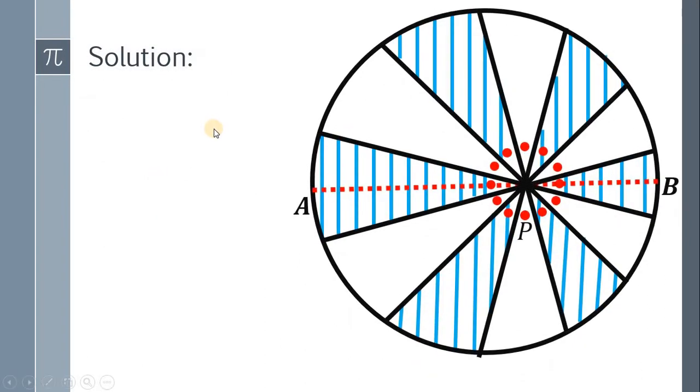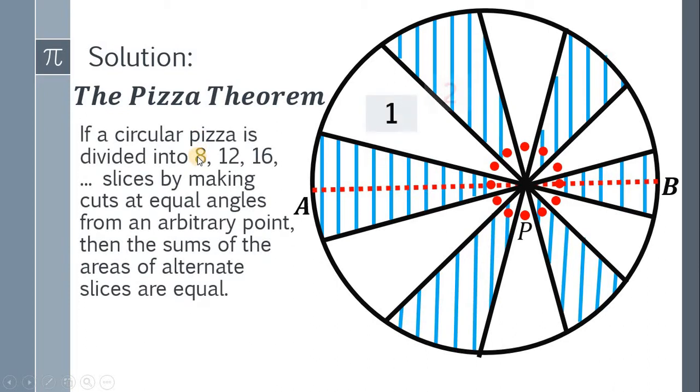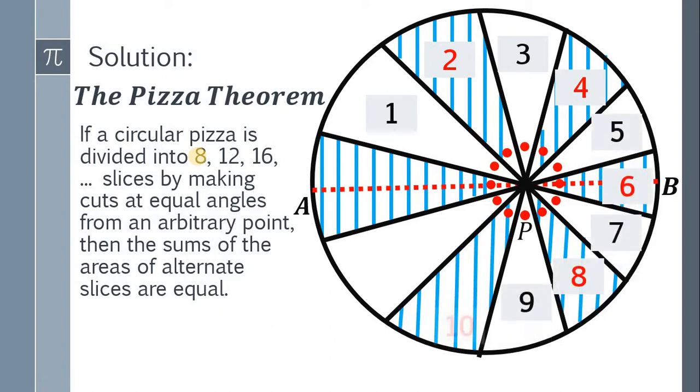Our solution to this problem involves the Pizza Theorem. Have you heard of the Pizza Theorem before? If not, here it is: If a circular pizza is divided into 8, 12, 16, and so on slices by making cuts at equal angles from an arbitrary point, then the sum of the areas of alternate slices are equal.